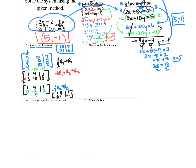Now that we're in row echelon form, this whole thing reads as x plus 4y equals 1 and y equals negative 1. We have one variable, so we'll use back substitution: x plus 4 times negative 1 equals 1, giving x minus 4 equals 1. Adding 4 to both sides, x equals 5. Again, this is the same result — we get 5, negative 1 — using a couple of row operations.